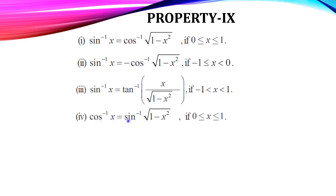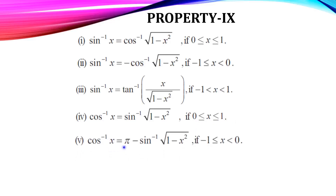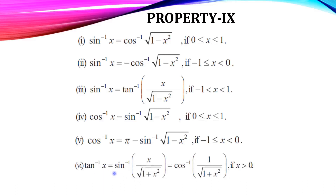Tan inverse x = sin inverse(x/√(1+x²)) = cos inverse(1/√(1+x²)), if x > 0. These are the interconversion identities between sin inverse, cos inverse, and tan inverse.